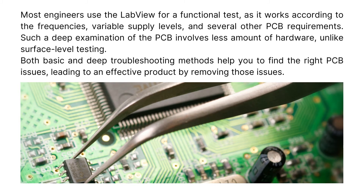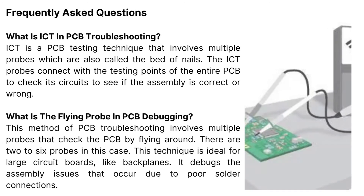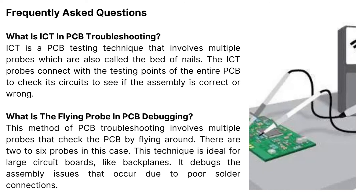Frequently asked questions — What is ICT in PCB troubleshooting? ICT is a PCB testing technique that involves multiple probes, also called the bed of nails. The ICT probes connect with the testing points of the entire PCB to check its circuits to see if the assembly is correct or wrong. What is the flying probe in PCB debugging? This method involves multiple probes that check the PCB by flying around, with two to six probes. It is ideal for large circuit boards like backplanes and debugs assembly issues that occur due to poor solder connections.